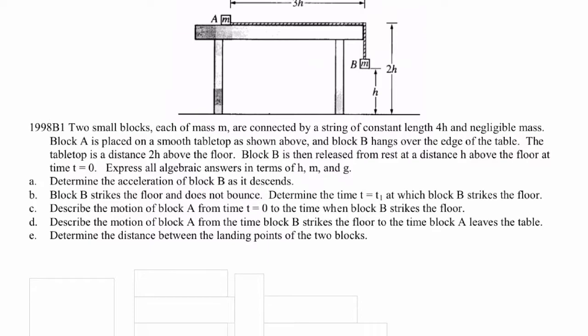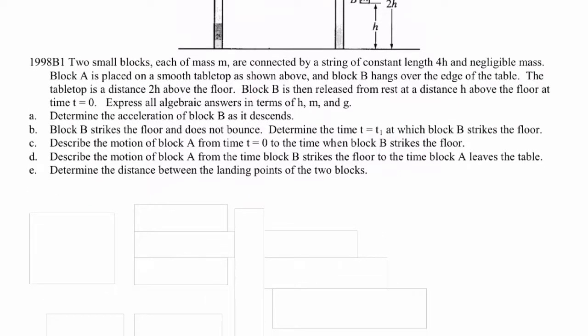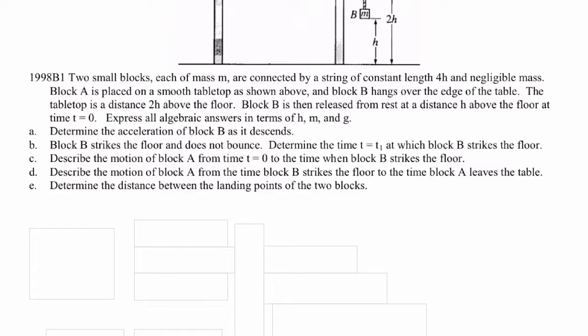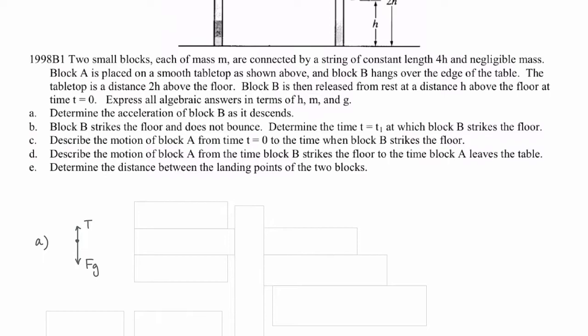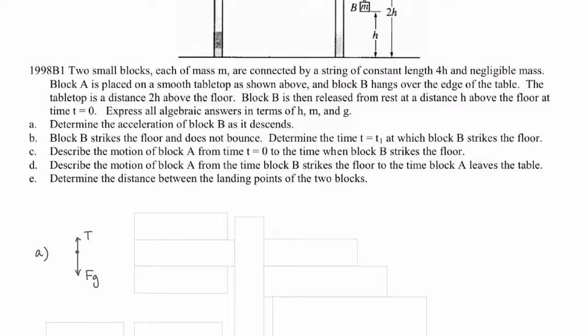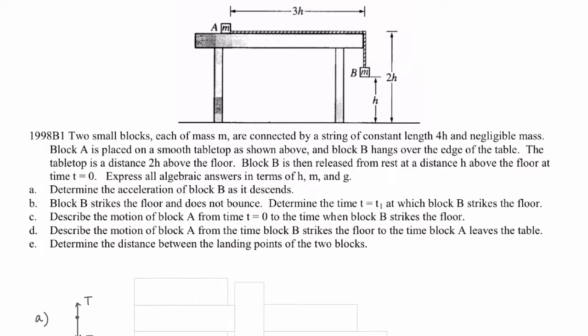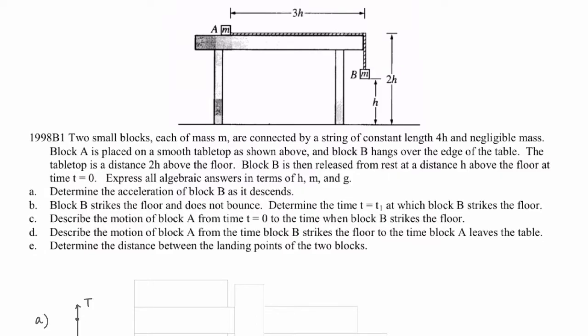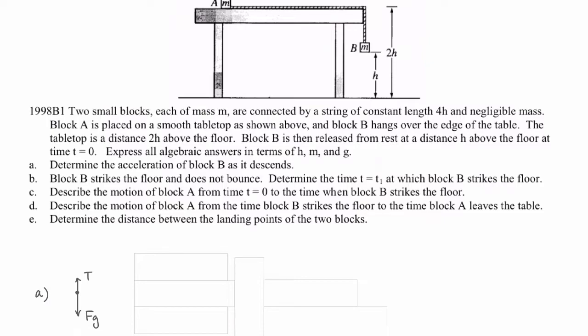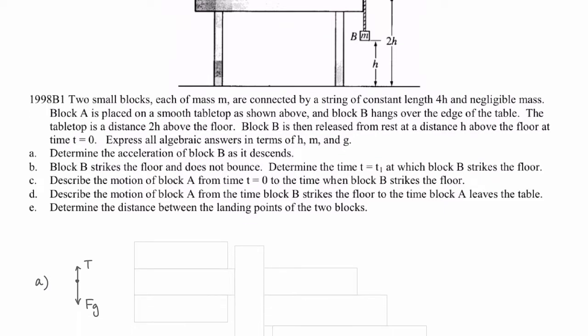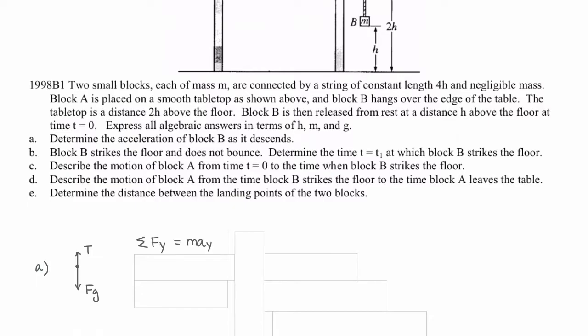Let's start by drawing free-body diagrams, which will allow us to write Newton's Second Law and solve for acceleration. For block B, there are only two forces in the y direction. Block B is accelerating downward, so the force of gravity should be drawn longer than the tension force acting upward.